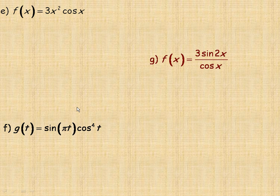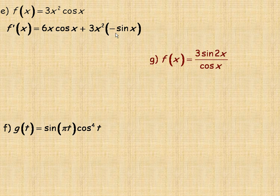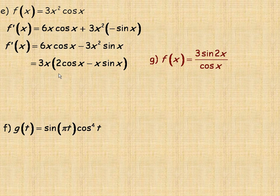Flipping over to the second page. In part e, we're given a product: 3x²·cos(x), so we use the product rule. Start by differentiating 3x² first — its derivative is 6x by power rule — times the second function cos(x). Then plus the first function 3x² times the derivative of cos(x), which is -sin(x). Simplifying, we bring the negative forward to get 6x·cos(x) - 3x²·sin(x). We can also factor out 3x as a common factor, giving 3x(2cos(x) - x·sin(x)).